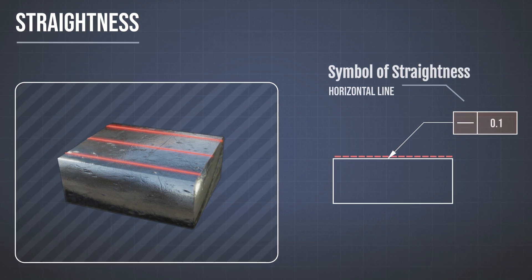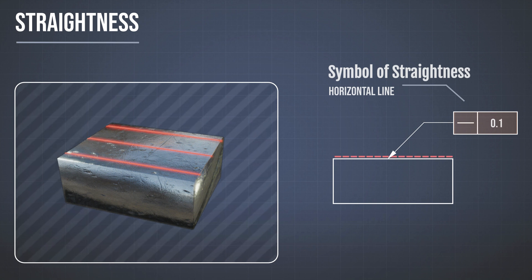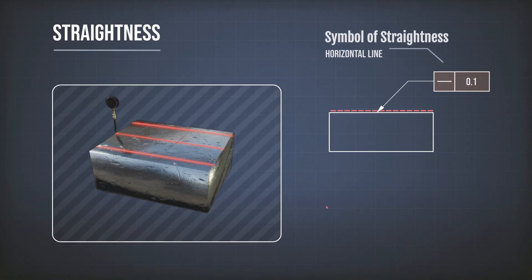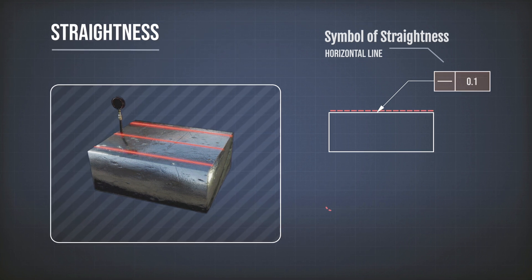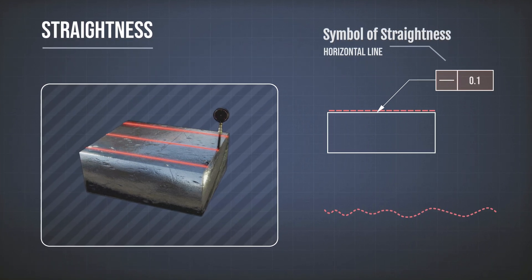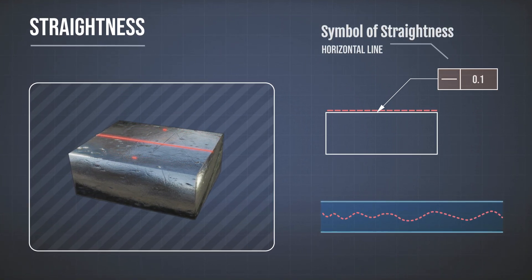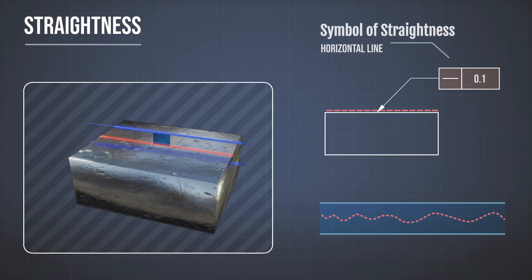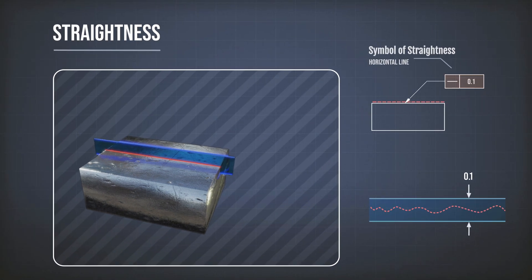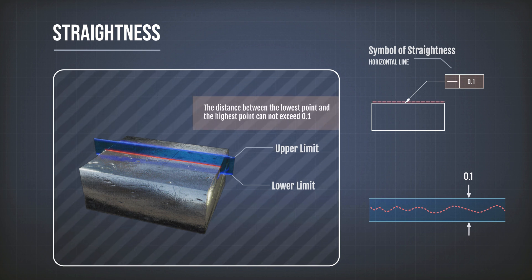Any line between them also has to fulfill this tolerance. In reality, we measure the first point and find it somewhere here. Then we measure the second point and it's a little bit lower. Then comes the third point, a little bit higher. We have all these points that result from our measurement — this is the real line. The straightness tolerance means I have two lines, and any point from the measured line has to fall between these two lines. The distance between these two lines is the width of the tolerance zone — 0.1 in this case. It starts from the lowest point to the highest point.